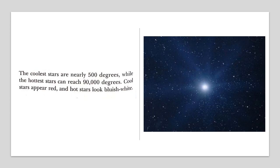The coolest stars are nearly 500 degrees, while the hottest stars can reach up to 90,000 degrees. Cool stars appear red and hot stars appear bluish white. You can imagine the temperature now is 45, 44, 42 and we feel so hot. So if the temperature is 500 degrees, what will be the condition? The cool stars have 500 degree temperature and hot stars have 90,000 degrees Celsius temperature.